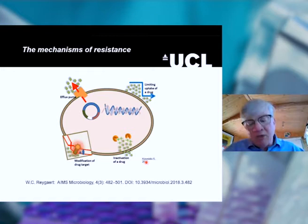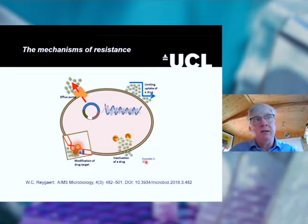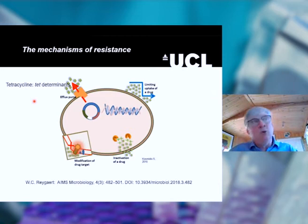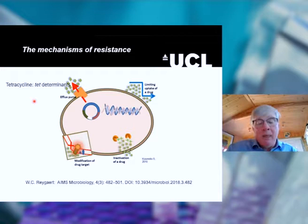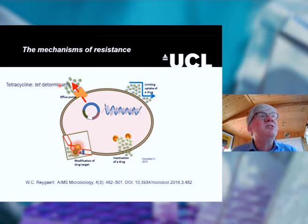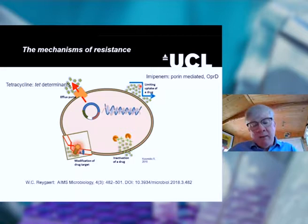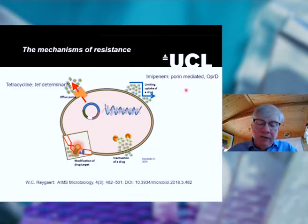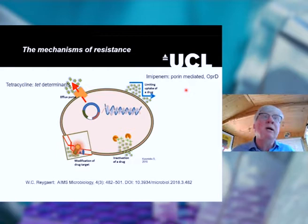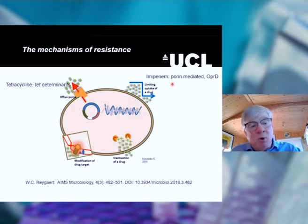Now let's think about the biology. How does a bacterial cell avoid an antibiotic? First, it can have efflux pumps to pump the antibiotic away — increasing efficiency of efflux pumps at the cell surface. A good example is the tet determinants, which are improved efflux pumps that expel tetracyclines. Alternatively, bacteria can block uptake of a drug — for example, the OprD proteins are porins that mediate uptake of molecules and preferentially block imipenem.